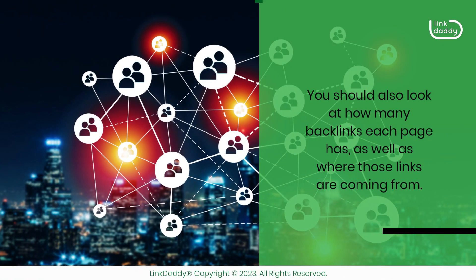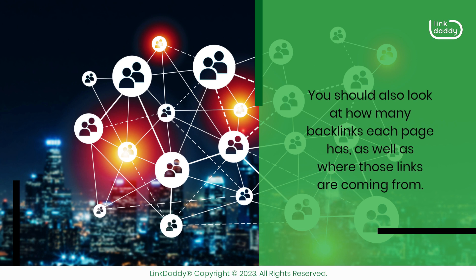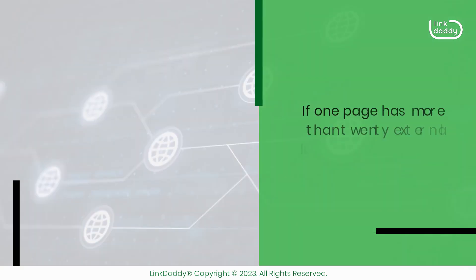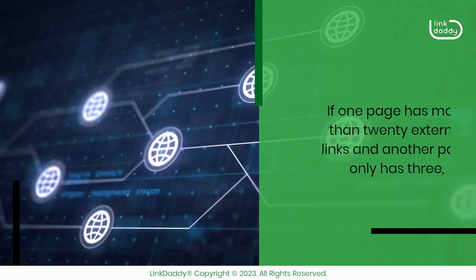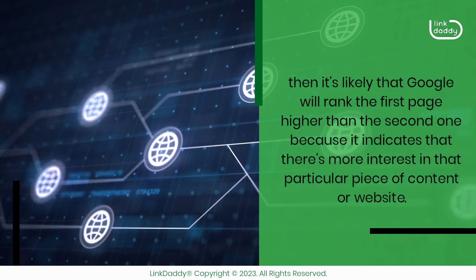You should also look at how many backlinks each page has, as well as where those links are coming from. If one page has more than 20 external links and another page only has 3, then it's likely that Google will rank the first page higher than the second one, because it indicates that there's more interest in that particular piece of content or website.